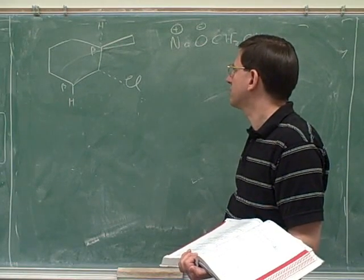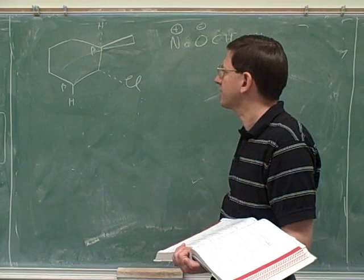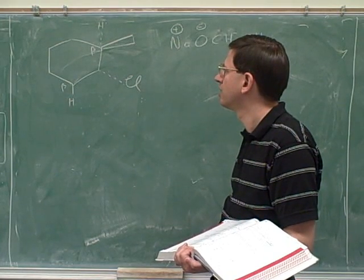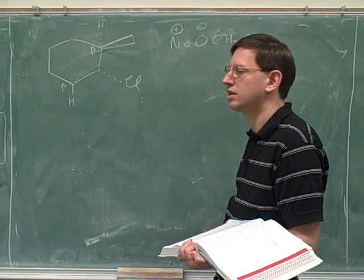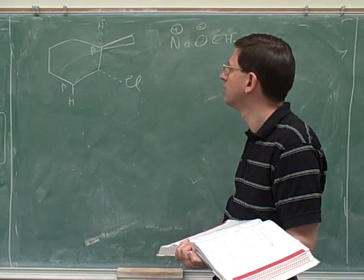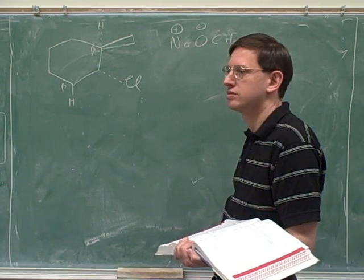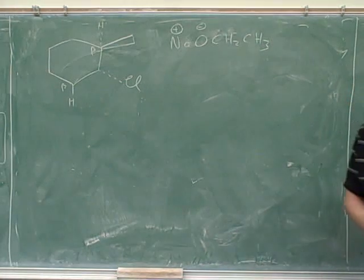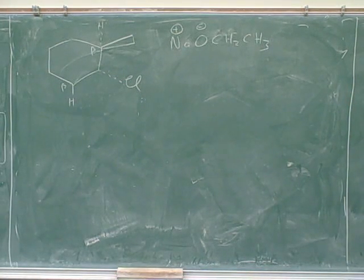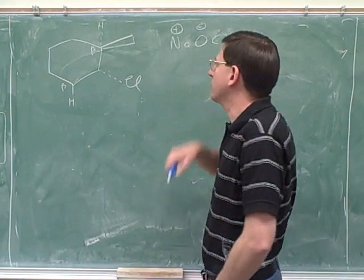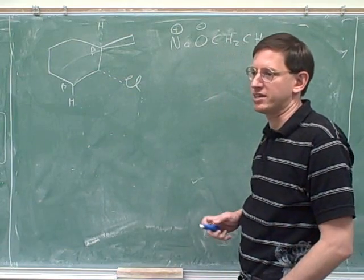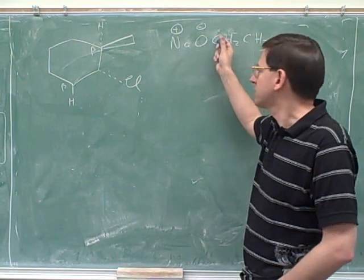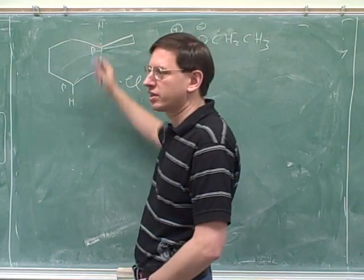Which of those beta hydrogens does it seem like the base would most like to take, based on substitution? Zaitsev tells us we prefer to form the more substituted alkene, unless we have a really bulky base. This base is not bulky enough, so we'd prefer to attack this one.